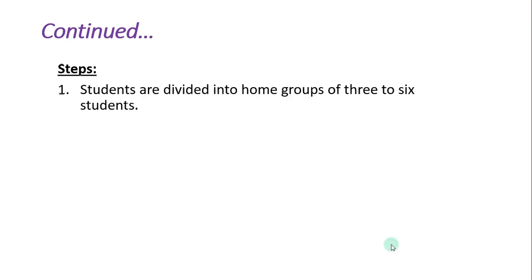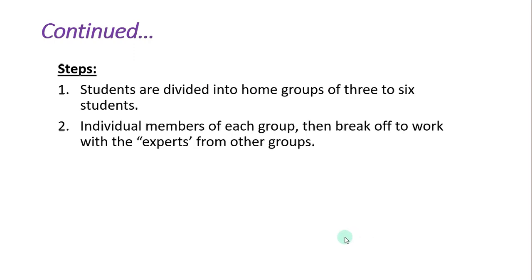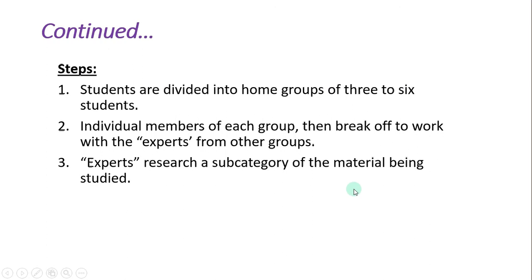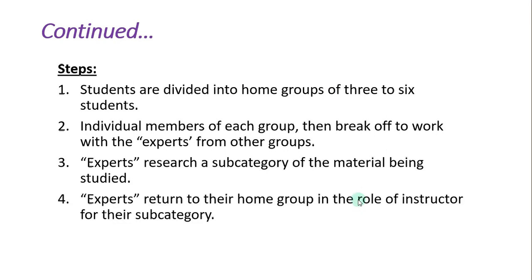Now, what are the steps we have to follow? Students are divided into home groups of 3 to 6 students. Individual members of each group then break off to work with experts from the other groups — they will break up and some members will go to the expert group. The expert will join the other group, discuss, and learn. Experts research a sub-category of the material being studied, and then experts return to their home group in the role of instructor for that sub-category.